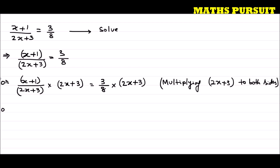Now I can write x plus 1 — this 2x plus 3 and this 2x plus 3 cancels out — and we are left with x plus 1 is equal to 3 into 2x plus 3 divided by 8.